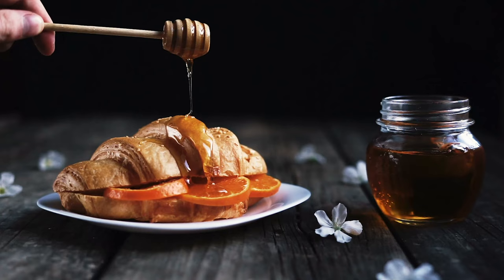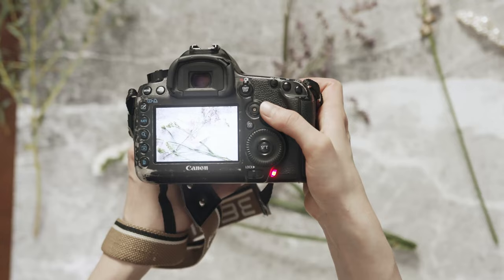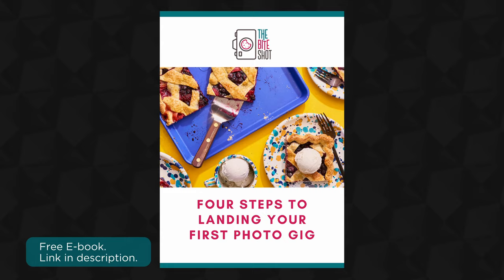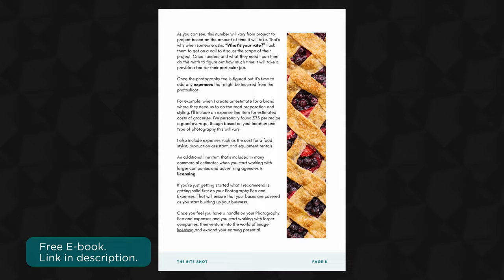The first question was asked in all sorts of forms from a variety of different people: is it better to charge for the full project, per dish, per recipe, per product, or per image? What's the best way to package that? A very first place to start is go grab my free ebook, Four Steps to Booking Your First Gig, linked down below. That gives a good baseline understanding of how I price my services.